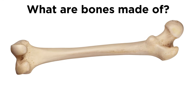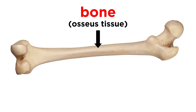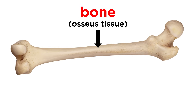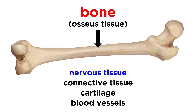So what exactly are bones made of? How can we connect this image with what we know about molecules and cells? First let's make the distinction between bone, a type of tissue, and an actual complete bone, which is an organ, because it is made of several types of tissue. Most of a bone is made of bone tissue, but there is also nervous tissue, connective tissue, cartilage, and blood vessels.